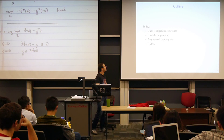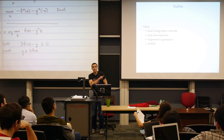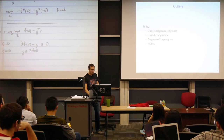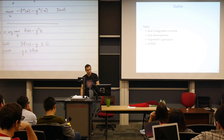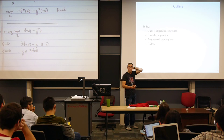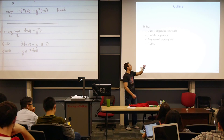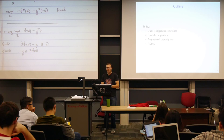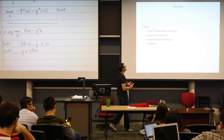We'll talk about dual gradient methods or subgradient methods depending on whether the conjugate is differentiable or not. Then we'll learn a very important application called dual decomposition. We'll go to augmented Lagrangians, which are improved from dual methods in terms of convergence properties, but they're not decomposable — so they lose that nice feature of usual dual gradient methods. Then we'll move to ADMM, which combines the best of both worlds: good convergence properties of augmented Lagrangians and the decomposability of dual methods.